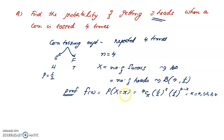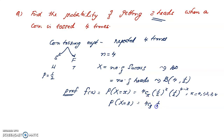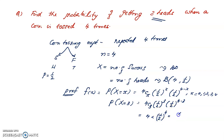We need to find the probability of 3 heads, so x = 3. P(X = 3) = 4C3 · (1/2)^3 · (1/2)^(4−3) = 4 · (1/2)^4 = 4 · (1/16) = 4/16. The answer is 1/4.